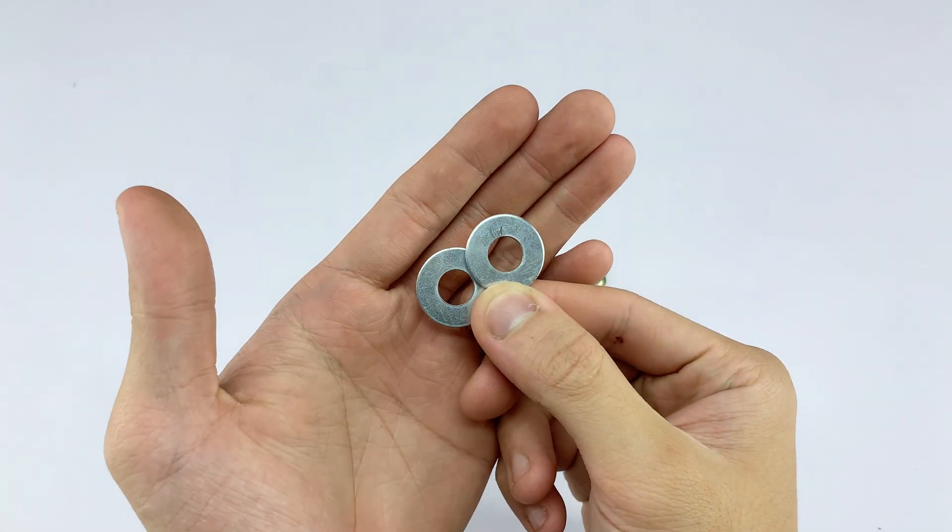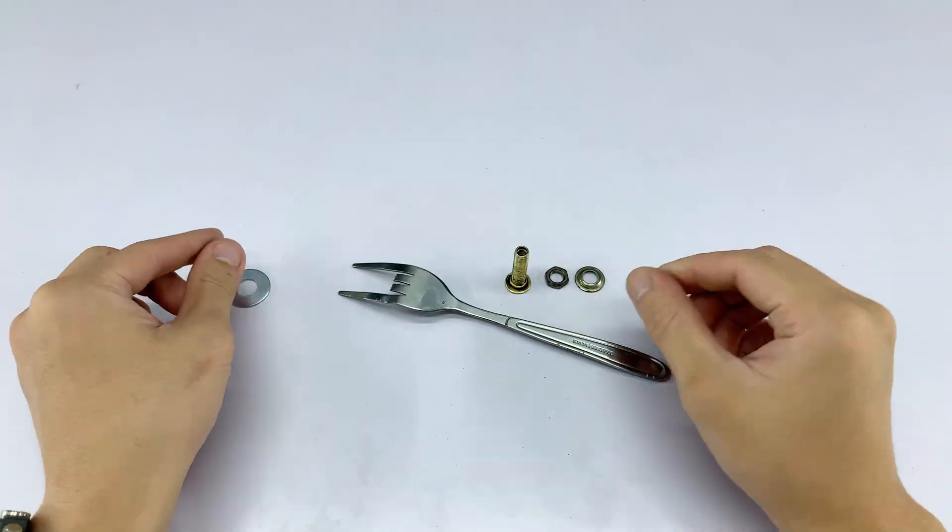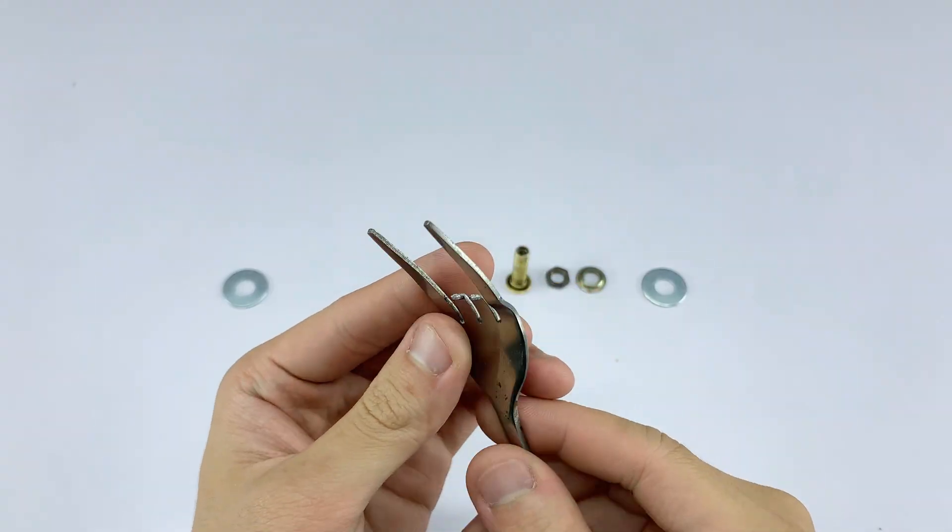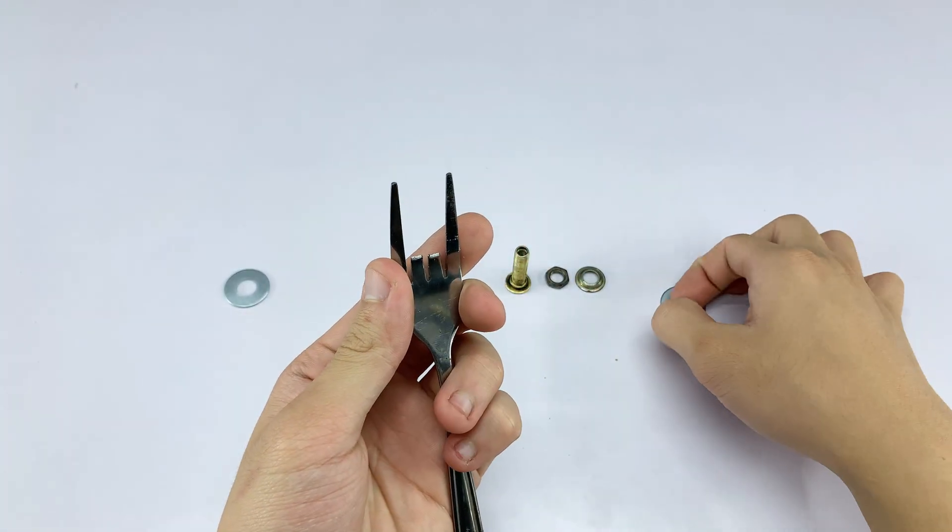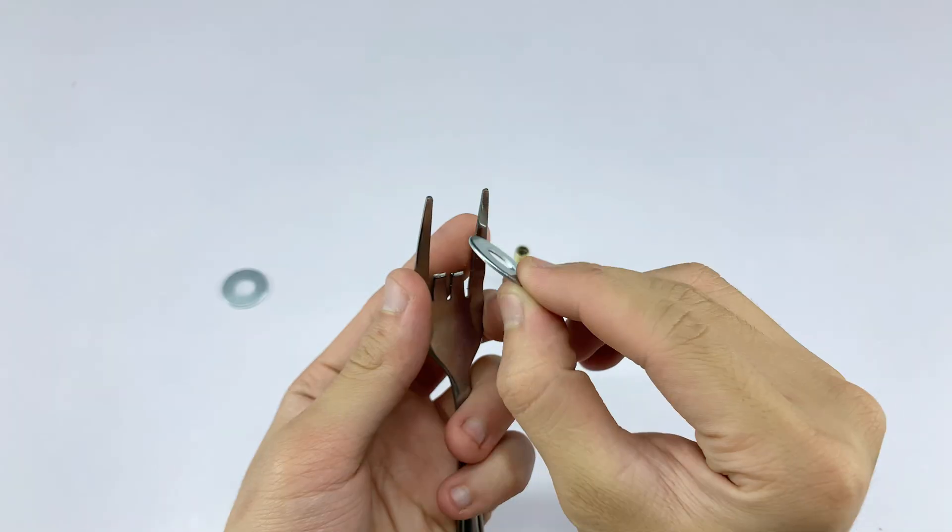With the fork prepared, I'm now taking a couple of metal washers. I'll place these on the middle tines of the fork. They will help secure our valve stem firmly in place.